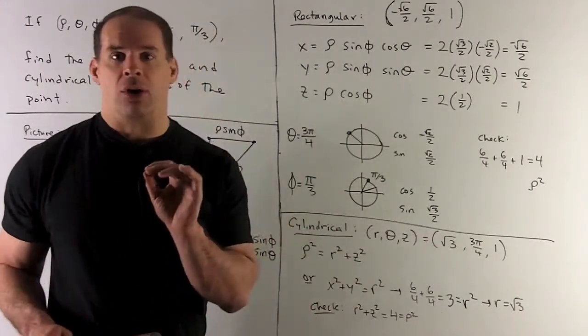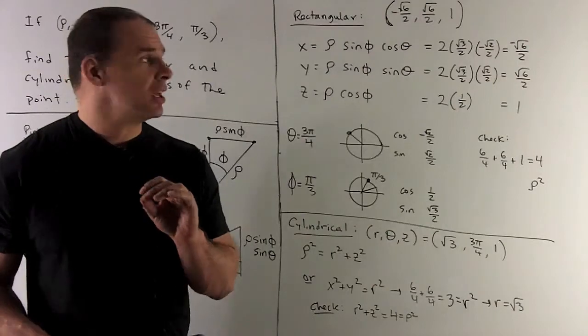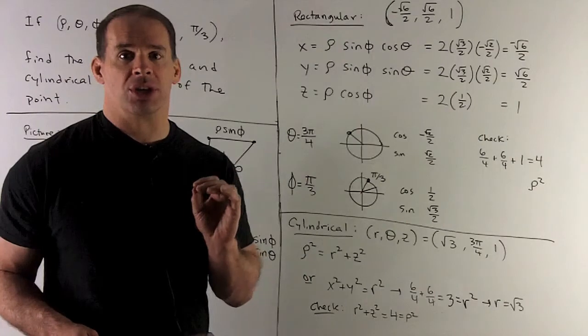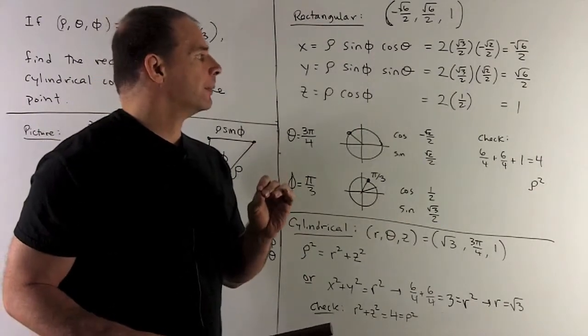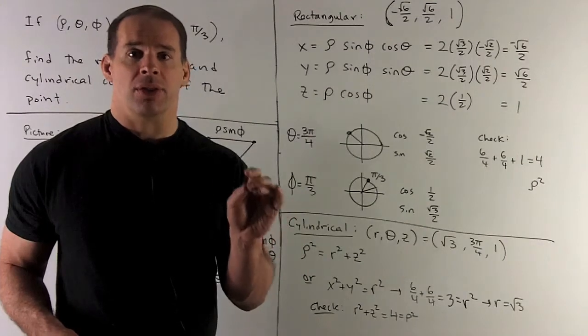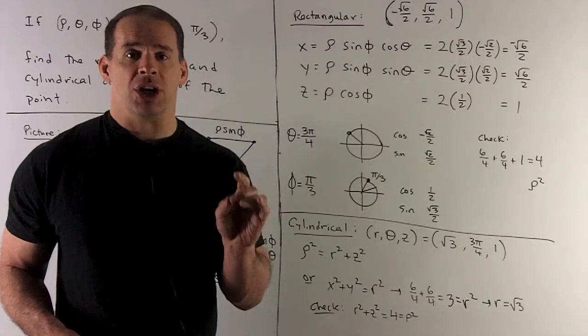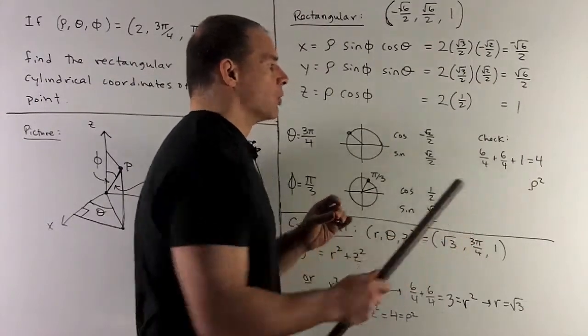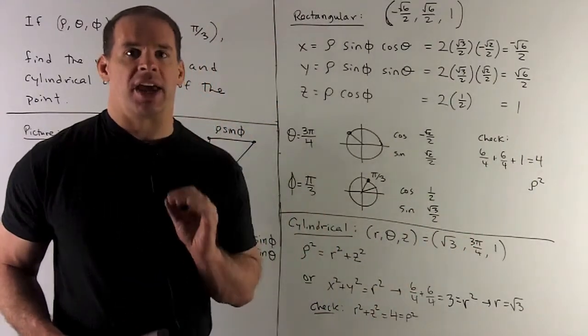Now, just a matter of plugging into our equations. So what comes out? Minus square root of six over two, square root of six over two, and one. One thing I can check: if I take the sum of the squares and take the square root, I should get our rho. So I take the sum of the squares, I get four, and that's rho squared, so at least that checks out.